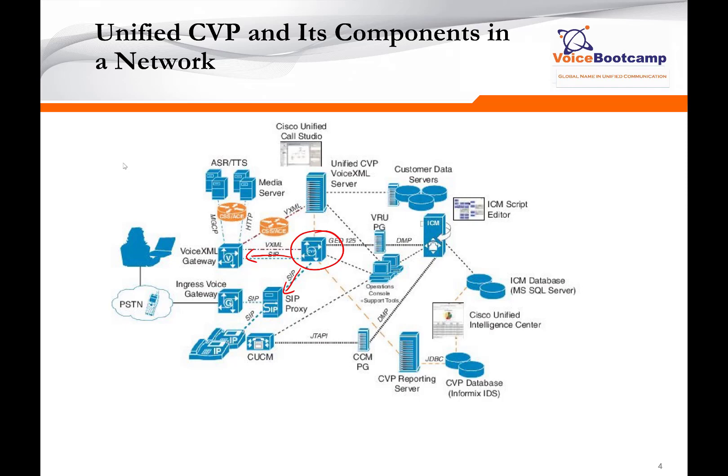CVP can communicate with ICM or Contact Center Enterprise using VRUPG. It uses a protocol known as GED125. This is an important topic to note, because in interviews you may be asked what protocol CVP uses to communicate with ICM — that would be GED125 via the VRUPG. The protocol between the VRUPG and ICM is called DMP.